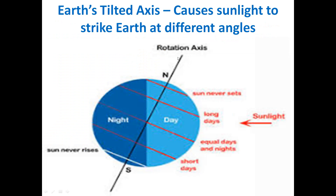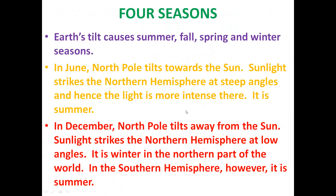We see the tilted axis here in this picture. The earth's axis is not straight, but tilted, and this causes the sunlight to strike the earth at different angles. The sunlight comes from this direction and, because of this tilted axis, it strikes the earth at different angles. We all know there are four seasons: summer, fall, spring, and winter.